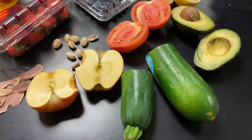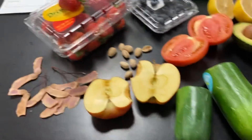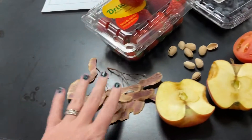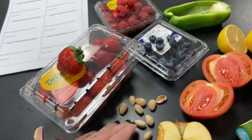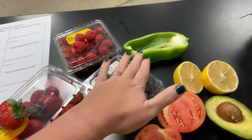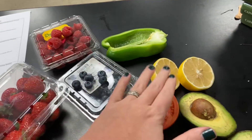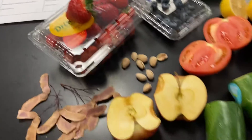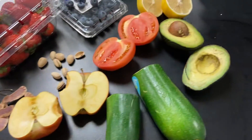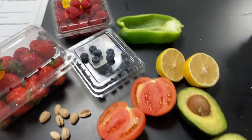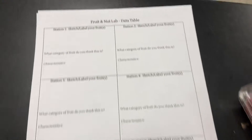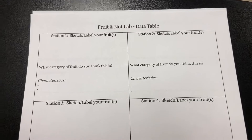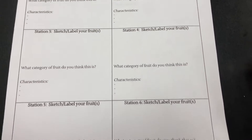This is the smorgasbord of what you are going to be identifying today — everything from zucchinis, apples, maple seeds, pistachios, bell peppers, and lemons. All of these have different categories that you're going to look at and identify at each one of your stations.